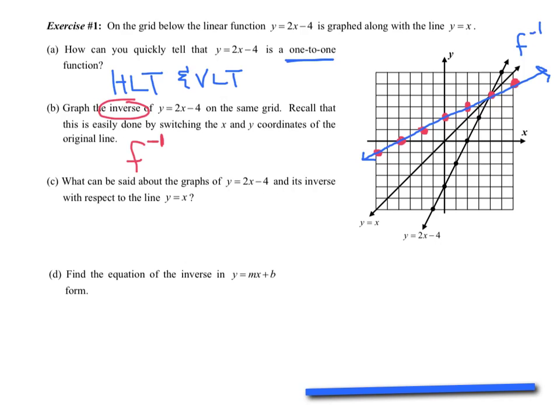Part C, what could be said about the graphs of y equals 2x minus 4 and its inverse with respect to the line y equals x? Well, any function and its inverse are reflections over that line y equals x.